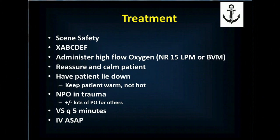For treatment, first ensure your own safety. Administer high-flow oxygen at 15 liters per minute via non-rebreather mask, or use a bag valve mask to support ventilation in respiratory distress or failure. Reassure and calm the patient and have them lie down. We no longer elevate the feet — it's not effective for improving perfusion and shifts abdominal organs against the diaphragm, compromising breathing. Keep the patient warm but don't overheat them, as excessive heat causes vasodilation and shifts blood to the periphery.